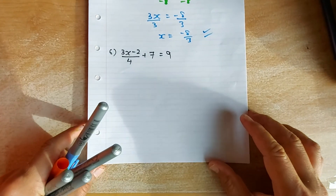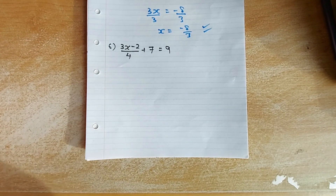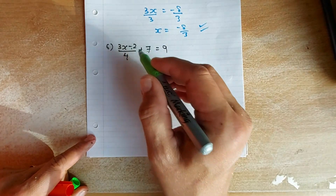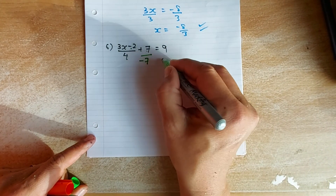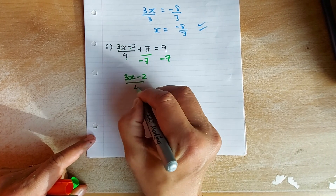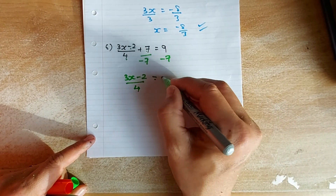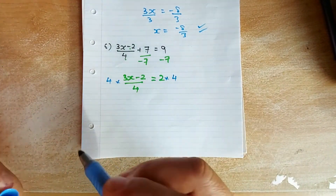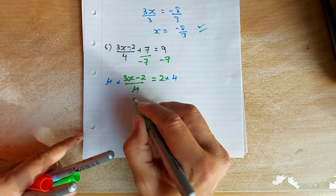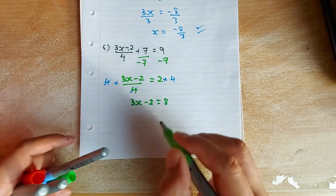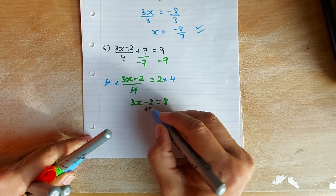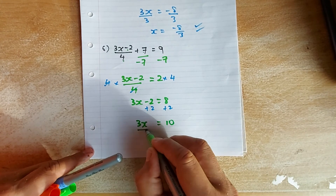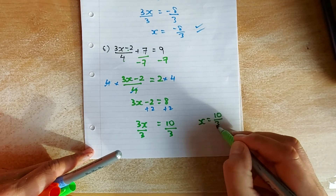Last but not least — the hardest question. There are 4 intruders: 3, negative 2, 4, and 7. Get rid of the least connected first: minus 7 on both sides cancels the 7, leaving 3x minus 2 over 4 equals 2. Multiply both sides by 4 to cancel the 4: leaves 3x minus 2 equals 8. Add 2 on both sides: 3x equals 10. Divide by 3: x equals 10 over 3. That's 2 marks.